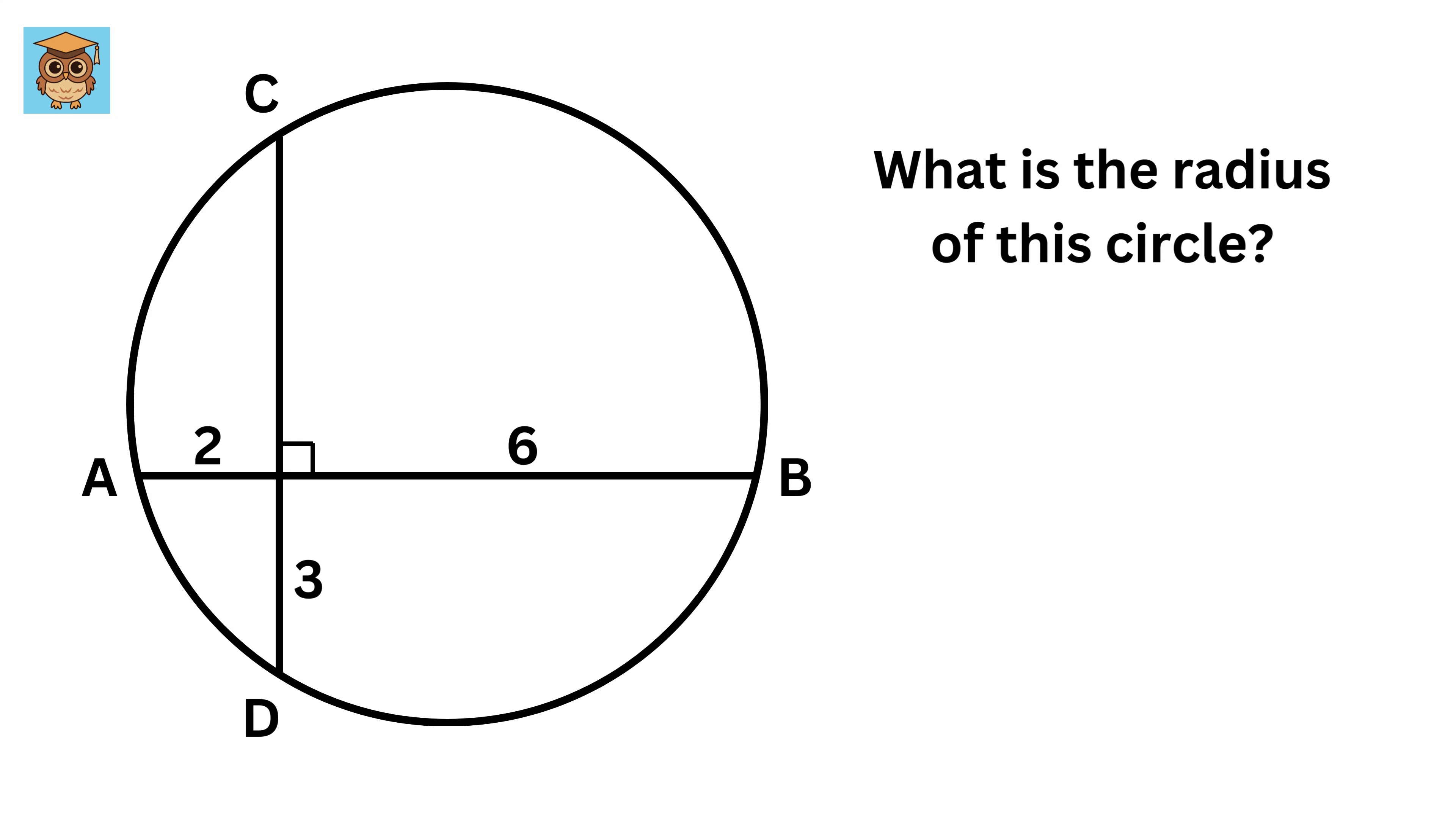In the following circle we have two chords AB and CD that are perpendicular to each other. The lengths of some parts of these lines are given. We need to find the radius of this circle.